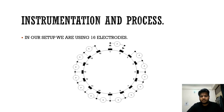Now let us look at the instrumentation and process followed in electrical impedance tomography. In the setup we are using, 16 electrodes are arranged as shown here. We inject current between any two electrodes and measure the voltage between all other pairs of electrodes. This process is repeated for all possible pairs of electrodes.